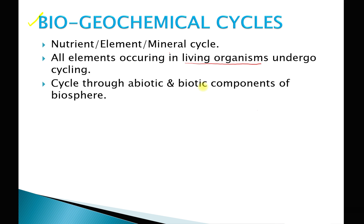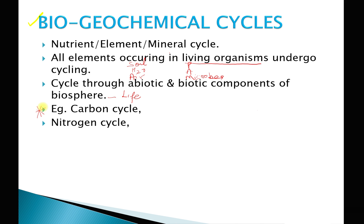Now let's understand what is meant by abiotic, biotic, and biosphere. Biosphere means all life present on Earth. Abiotic components are the non-living components like soil, water, and air. Biotic components include plants, animals, and microorganisms. Examples of biogeochemical cycles are the carbon cycle — which we will study in detail in this lecture — as well as the nitrogen cycle, the phosphorus cycle, and the sulfur cycle, which we will study in upcoming video lectures.